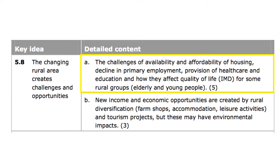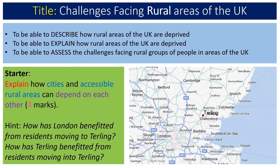Hello Year 11 and welcome to another lesson in your unit of work, the UK's evolving human landscape. Today we're going to be focusing on 5.8a, which is looking at the challenges affecting rural areas. Hopefully today you're going to be able to describe how rural areas of the UK are deprived, explain how and why they are deprived, and start to assess the challenges facing rural groups of people in areas of the UK.